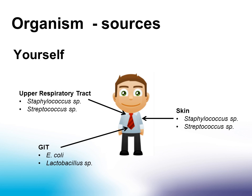You are also a source of organisms, and they may cause disease if they get into a part of your body where they are not usually found. For example, E. coli can harmlessly live in your gut. However, if it gets into your bladder, it can cause a urinary tract infection.